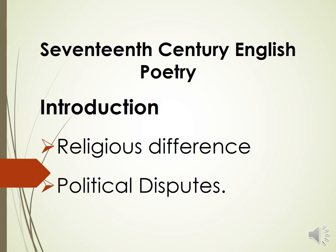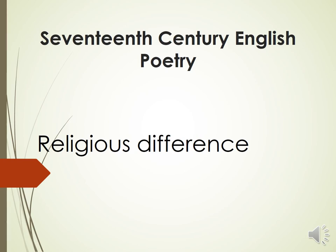This introduction includes two sections: the first is religious differences and the second is political disputes. Religion in the 17th century assumed an importance unparalleled in previous ages. According to majority of accounts, nearly half of the books published between 1600 and 1640 were on religious topics. The Church of England grew in power and seemed to encompass the whole nation, widening the gap between it and Rome, the seat of Catholicism. The rapid growth of Puritanism also cleaved the nation into two conflicting parties.